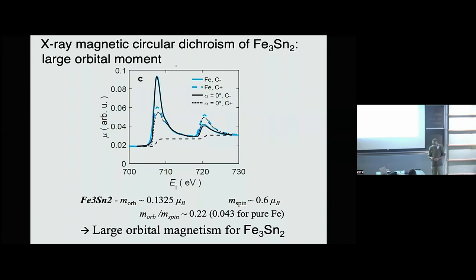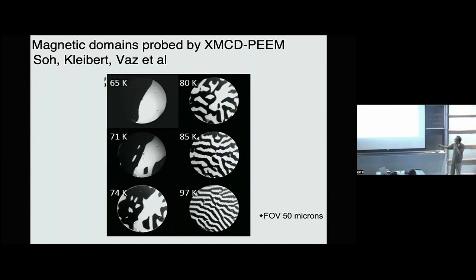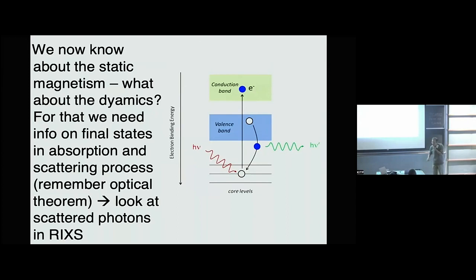Once you have this kind of sensitivity to magnetism from x-rays, the world of macroscopic and mesoscopic magnetism opens up in the form of microscopies. You can spatially resolve XMCD as you go across the sample to image domain patterns. Now I want to talk more about the microscopics. Remembering the optical theorem — things that are not absorbed must be scattered — we really want to learn not just about the static magnetism but about the dynamics. For that we need to learn about the final states in the absorption process, using resonant inelastic x-ray scattering, RIXS.